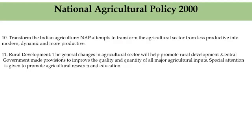The central government in recent years has made provisions to improve the quality and quantity of all major agricultural inputs. Special attention is given to promote agricultural research and education through the Indian Council of Agricultural Research, i.e., ICAR. Agricultural Extension Service through Kisan TV was provided on new farming techniques, water conservation, organic irrigation, fertilizers, and mechanization aspects of agriculture. With all these measures, it is hoped that the agricultural sector will achieve the targeted growth of 4%.